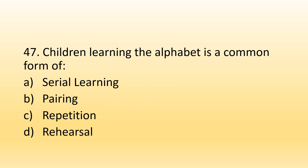Number 47. Children learning the alphabet is a common form of: Option A, Serial learning; Option B, Pairing; Option C, Repetition; Option D, Rehearsal. The right option is Option A, Serial learning. Serial learning is when children remember A to Z alphabets in a sequence — they recall them in order, learn them again, and can read the alphabet in sequence. They also need to understand the sound of each letter (phonics) and its shape, then step-by-step they begin proper reading.